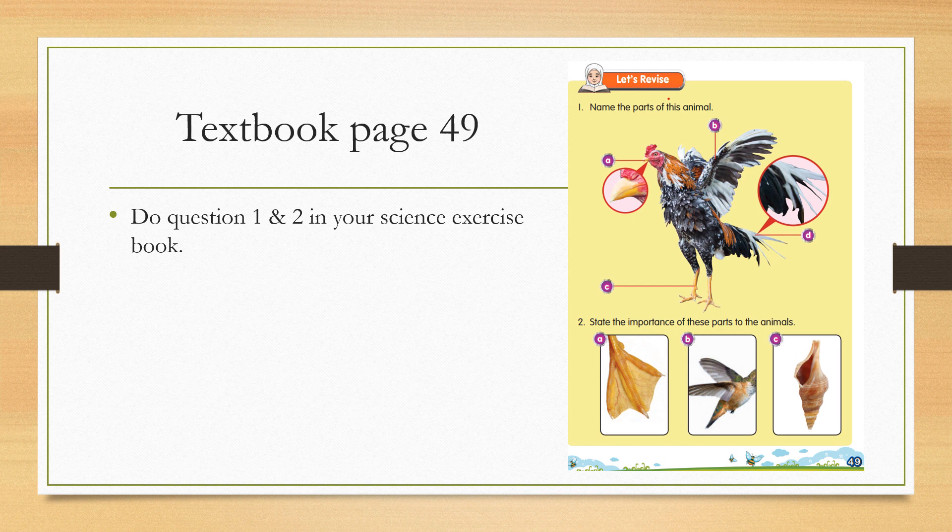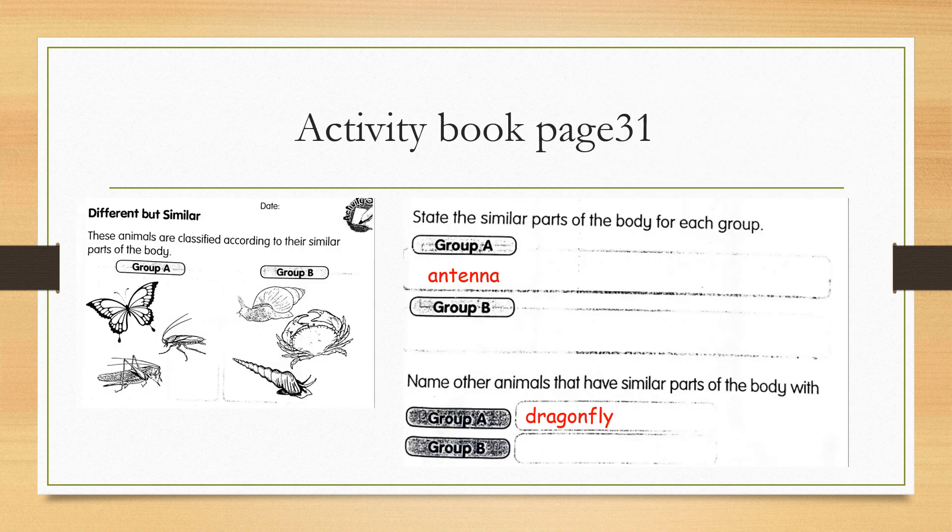Do the exercise in your textbook. Answer question 1 and 2 in your science exercise book. There are 2 groups of animals here: Group A and Group B. Question number 1 is state the similar parts of the body for each group.